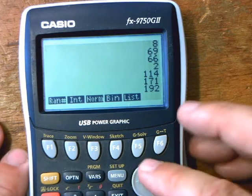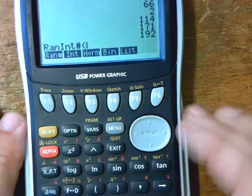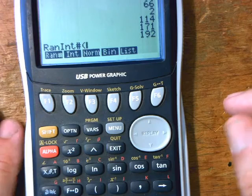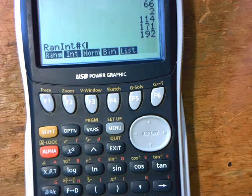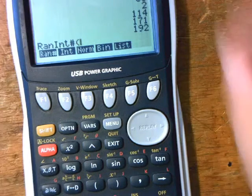So what you're going to do for your instructions is you're going to actually say: I am going to type in on my calculator ran int hash brackets 1 comma whatever you're doing. So if I give you 400 pieces of information, you're going to type in and you're going to say...